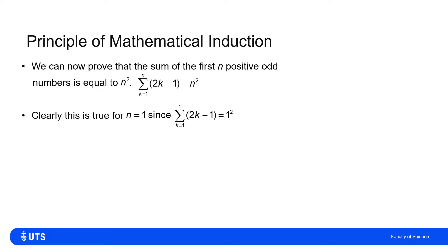To prove by induction, we establish the first term. Setting k = 1 to find the first odd number: 2(1) - 1 = 1. Adding one term of 1, we get the answer 1, which equals 1². So trivially, it's true for n = 1.